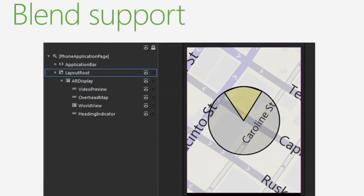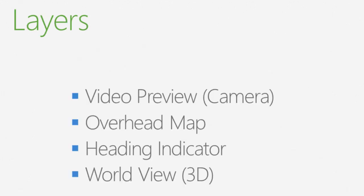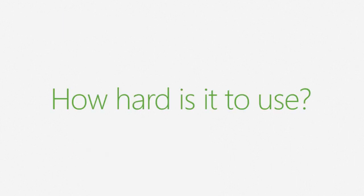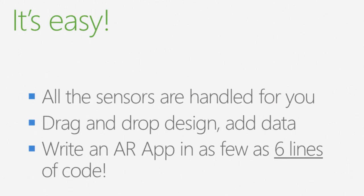So what do you get with the kit? First thing you get is Expression Blend support, which means you can literally build an AR app with your mouse. And the second thing you get is a set of pre-built layers, like the video preview layer which shows the camera, the overhead map, the heading indicator, and world view which shows everything in 3D. And how hard is it to use the kit? Well it's easy — all the sensors are handled for you. You can drag and drop your design, then all you need to do is add data. In fact, you can write an AR app in as few as 6 lines of code.